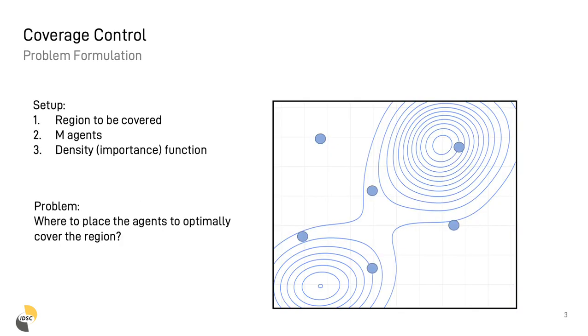We consider the following problem formulation. We aim to partition a convex region, depicted in the slide with a black box, with M agents drawn as blue circles. We also assume to know a density function that inform us in which areas of the region we want to partition events are more likely to happen. So the problem we need to solve is how and where to place the robots in order to optimally cover the given region.